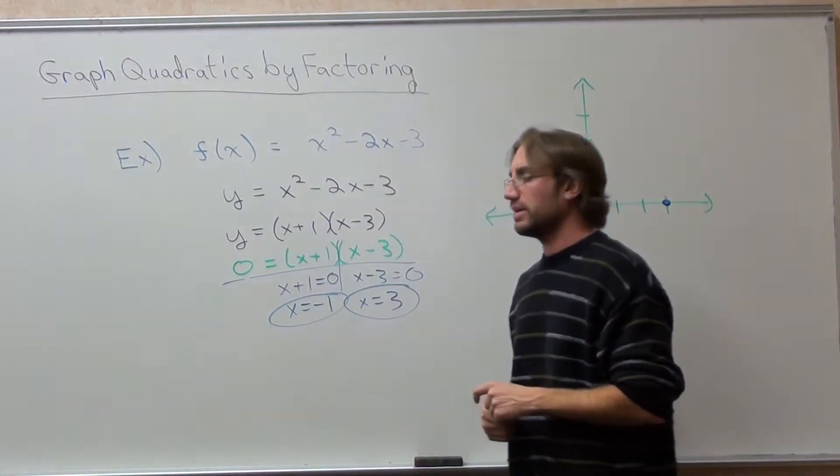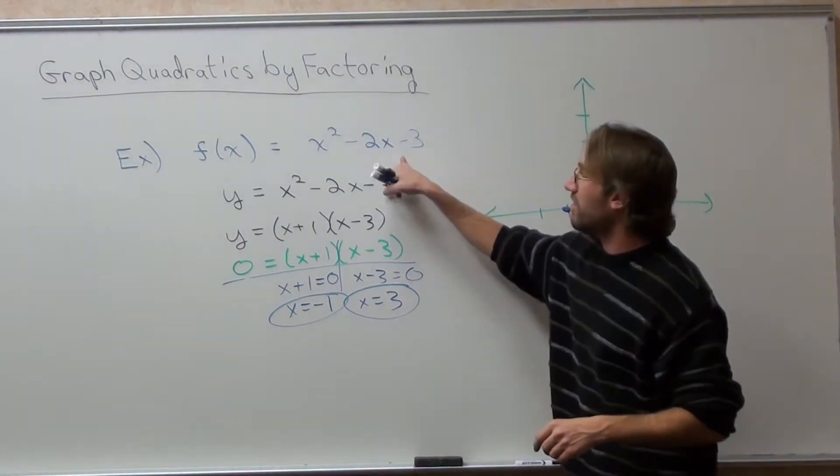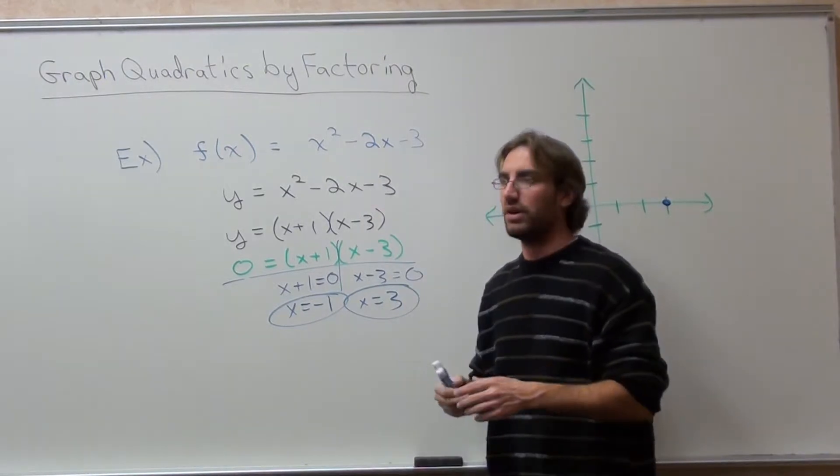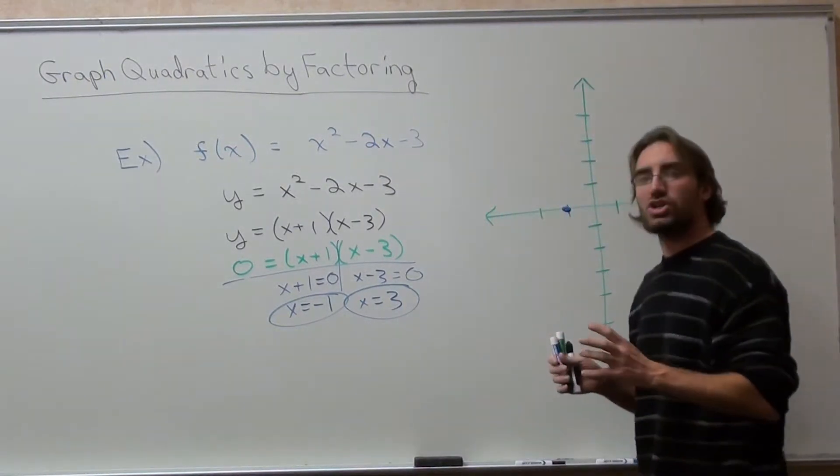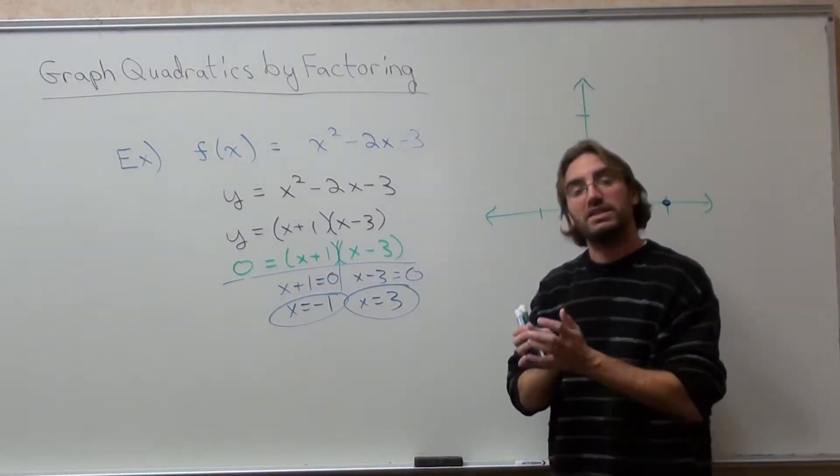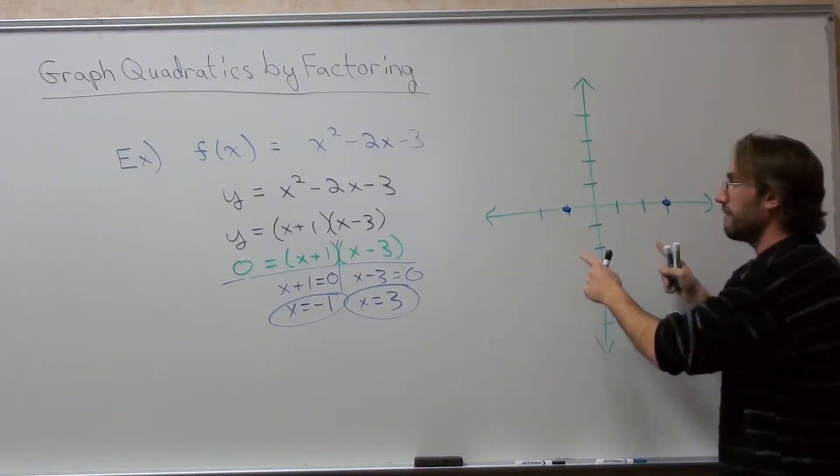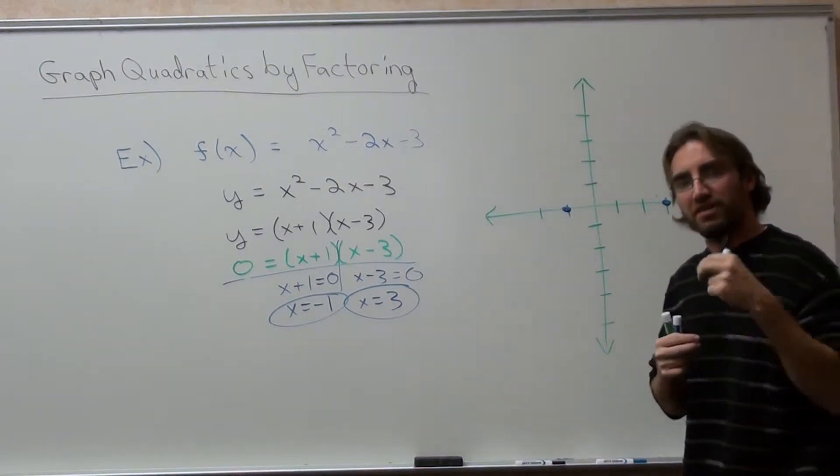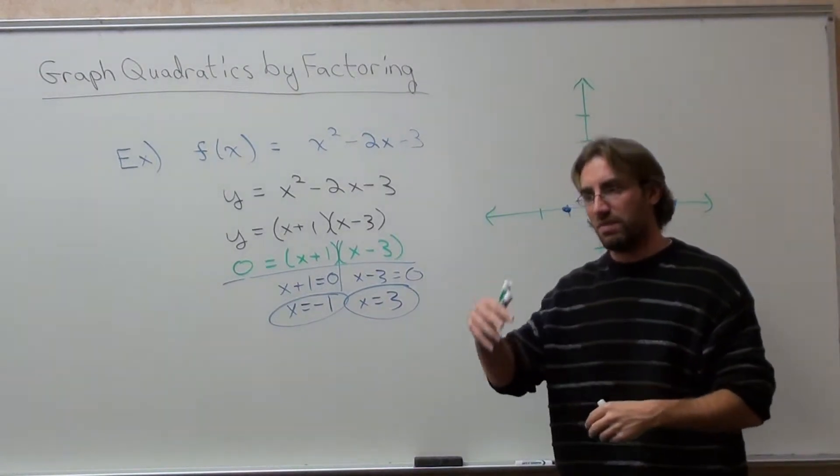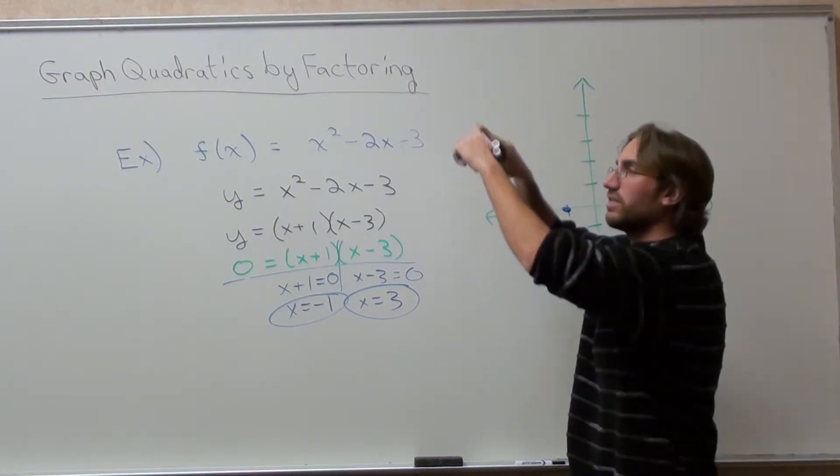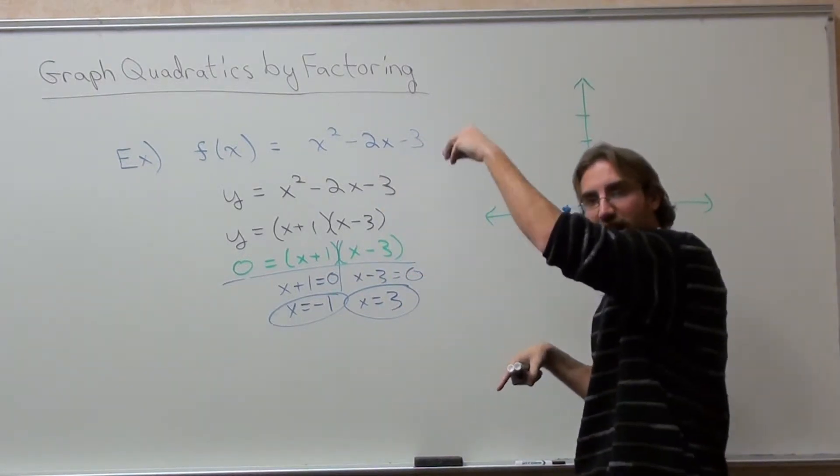Moreover, I know the graph is going to go up because it's a positive graph. If it was a negative, it would go down. Now, a quadratic function looks like a u. It's a symmetrical u, actually. And this is where they hit the x-axis. Now, I want to find my vertex, which is either my minimum or my maximum point. If the graph goes up, the vertex is the minimum point. If the graph goes down, it's the maximum point.